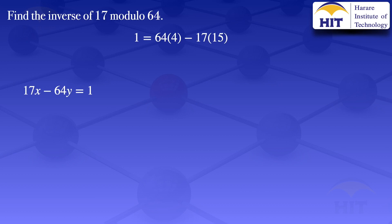The equation on the left has the form 17 times x. In our result on the right we have minus 17 times 15. To have a positive 17, we can write it as 17 times minus 15. And for the 64 term, putting the negative inside the parenthesis gives minus 64 times minus 4. So our equation becomes 17 times (minus 15) minus 64 times (minus 4) equals 1.